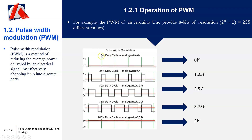Likewise, at 25% duty cycle, the signal is turned on for 25% of the time and turned off for 75%. Taking the average gives 25%, which corresponds to 1.25 volts. In terms of resolution: 1 at the low end, approximately 127 at halfway, and 255 fully applied. So you can understand the mapping between 0 and 255, duty cycle, and how that corresponds to varying the voltage between 0 and 5 volts.